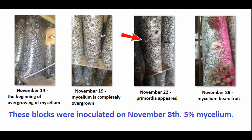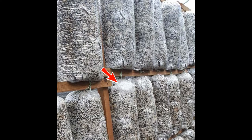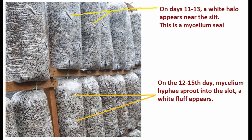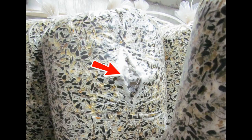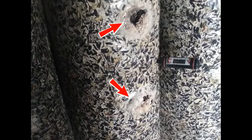Third Week of Incubation: on the 12th to 14th day, the straw substrate becomes completely white. After another one or two days, a pronounced white halo appears near the perforation, and then hyphae fluff appears on the slot. Of these, in a few days, the rudiments of fungal bodies are formed — this is called primordium. This ends the incubation period.